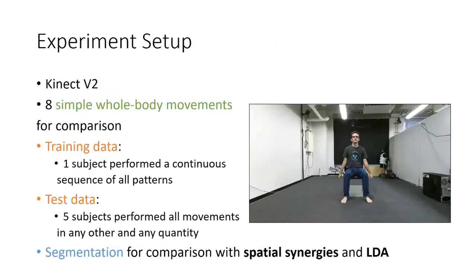To test our methods, we performed experiments with some subjects. They did eight simple whole body movements in front of a Kinect. For training data, we used the data of only one subject that performed all eight movements. To test the data, we asked five subjects to perform all movements, but we didn't define the number of movements or the order.